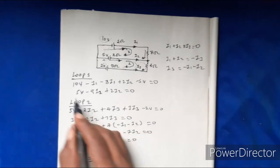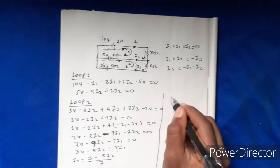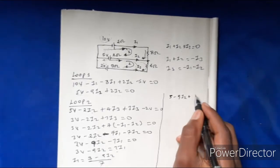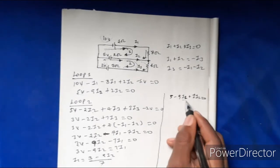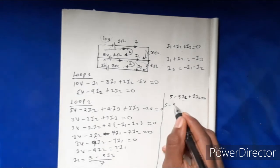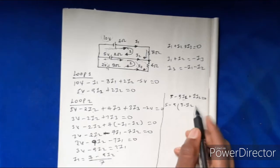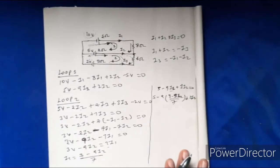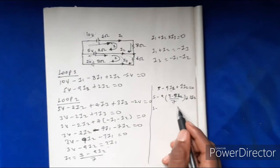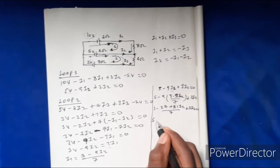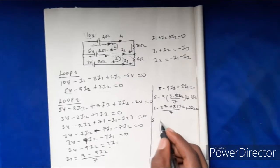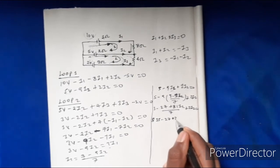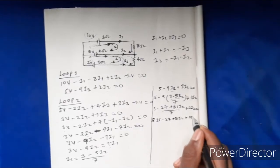We have the whole equation. So: 5 minus 9I2 plus I1 plus 2I2 equals 0. I1 value is 3 minus 9I2 over 7 plus 2I2. Simplifying: 3 minus 5, then 7 minus 27 plus 8.1I2 over 7. The equation becomes: 7 minus 27 plus 8.1I2 minus I2 equals 0.